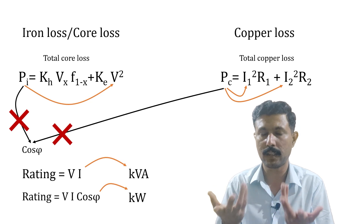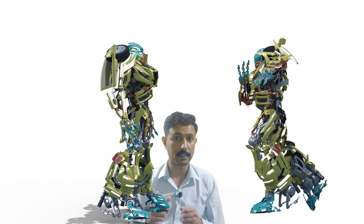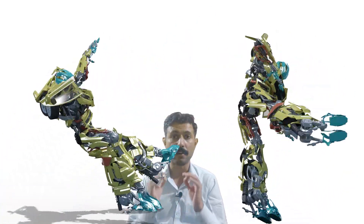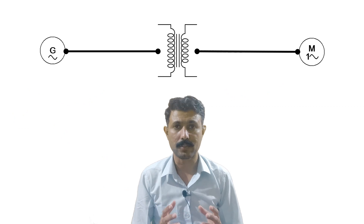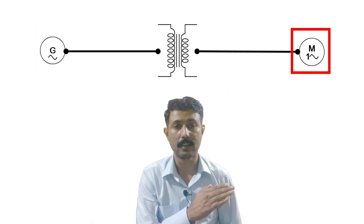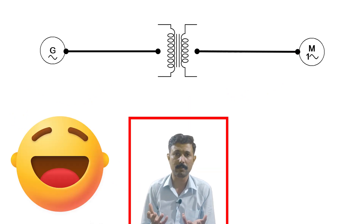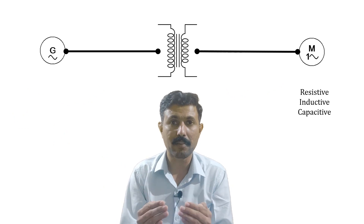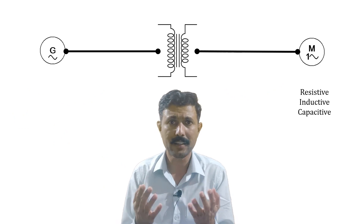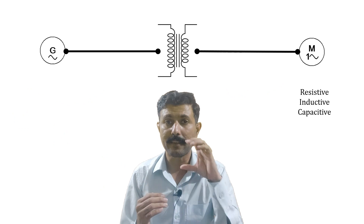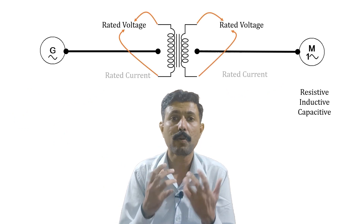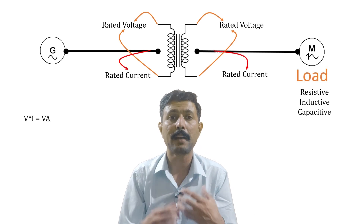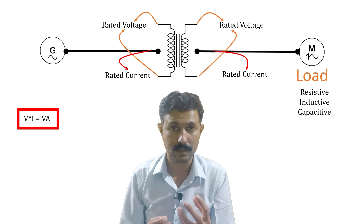The transformer is rated in VA, KVA, or MVA. Now here is another — more appropriate — explanation. Consider a single-line diagram of a power system: generating station, then the transformer, then the load. As a manufacturer of the transformer, I am not aware what type of load will be connected to my transformer. The power factor of the load is completely unknown to me. So I will decide the rating based on the information I have: the rated voltage and the rated current. I multiply them to get the VA rating.